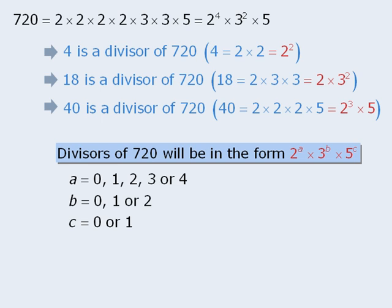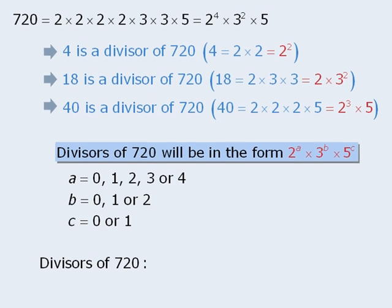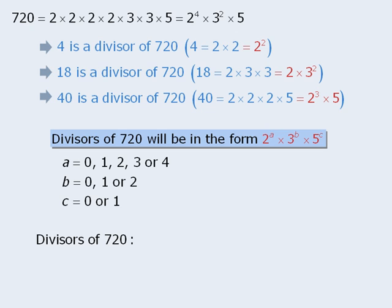We are now going to use this information to determine the total number of positive divisors of 720. We will do this using some counting techniques you may have not seen before. We are going to build divisors in stages. Since all divisors will be in the form 2 to the power of a times 3 to the power of b times 5 to the power of c, our first stage will be to select a power of 2. Our next stage will be to select a power of 3, and our last stage will be to select a power of 5.